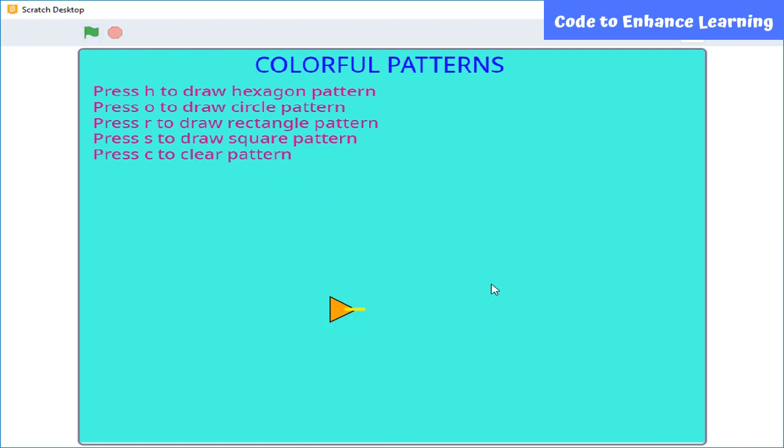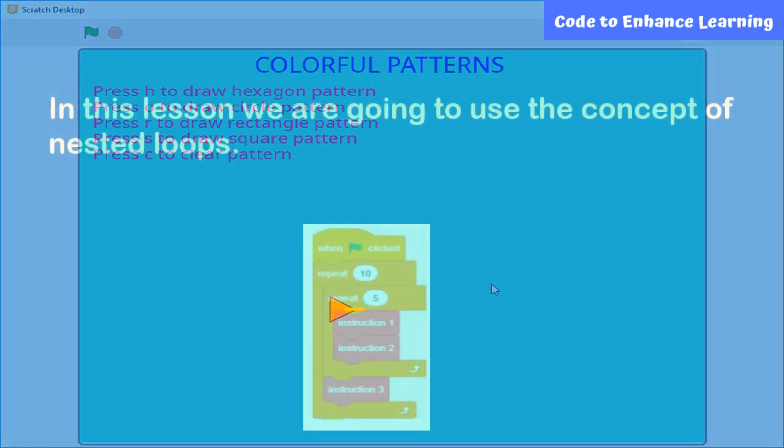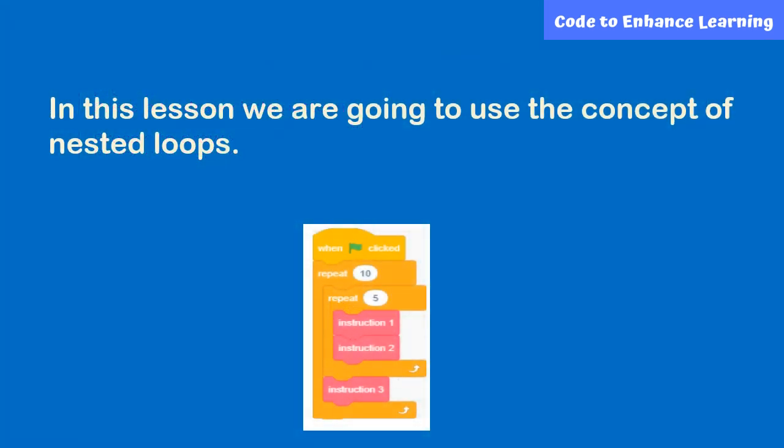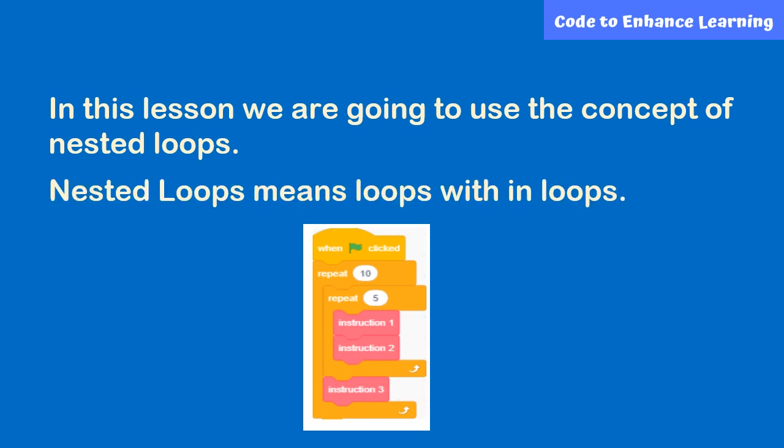A square pattern is formed. So in this lesson, you will learn to make an application to make cool patterns with geometrical shapes. Are you ready? In order to make this application, we need to learn a concept called nested loops. Nested loops means loops within the loop. Here you can see that one loop is inside the other loop. Such loops are called nested loops.